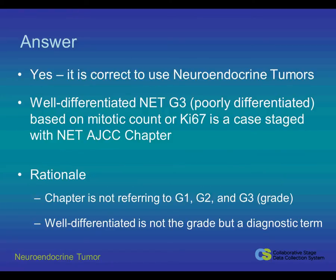The answer is yes for that scenario. It is correct to use the Neuroendocrine Tumor Chapter and the CS Neuroendocrine Tumor Schemas for this case. A well-differentiated neuroendocrine tumor grade 3, poorly differentiated, based on mitotic count or KI67, is a case staged with the Neuroendocrine Tumor AJCC Chapter and your CS Schemas for neuroendocrine tumors.